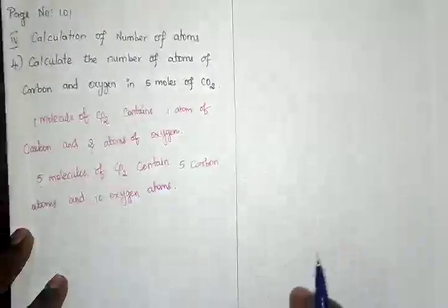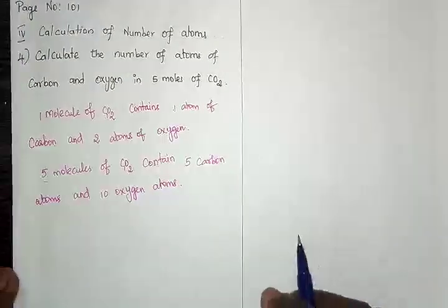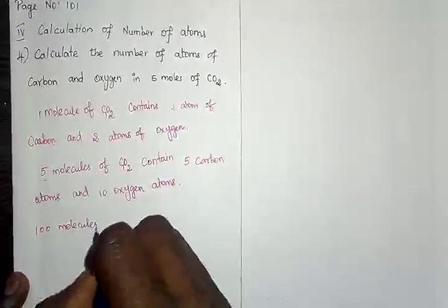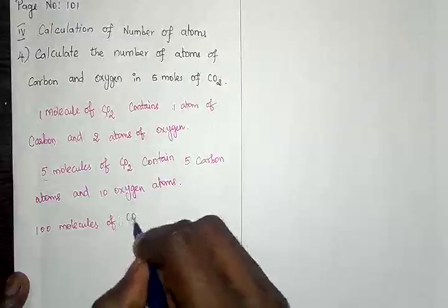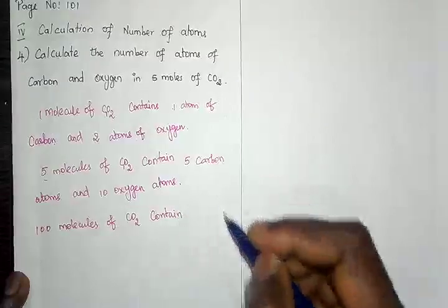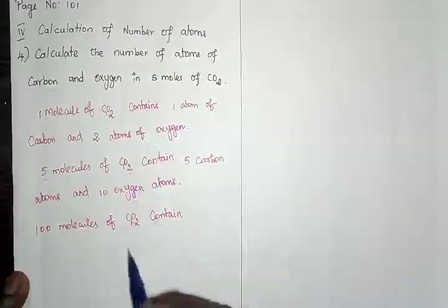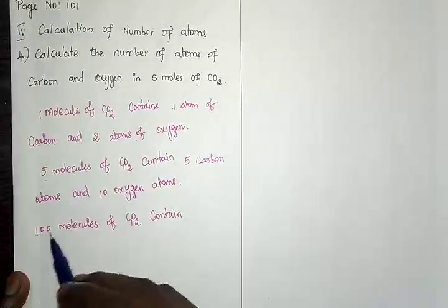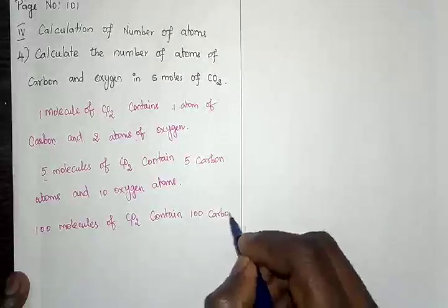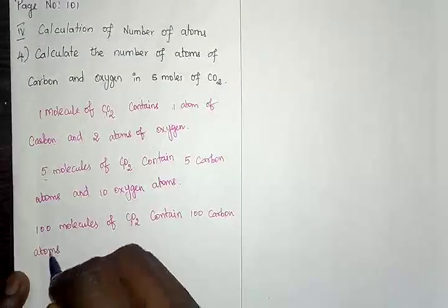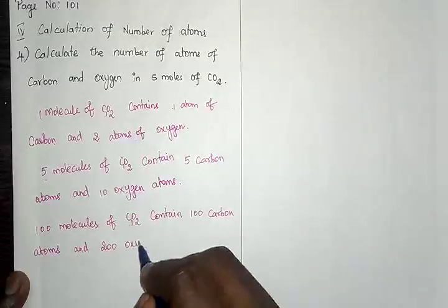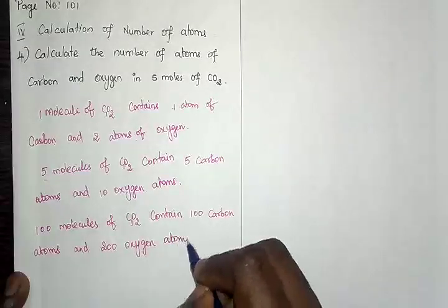Now, what if I give 100 molecules of carbon dioxide? The idea is simple: the number of carbon atoms is one per molecule, so 100 into one gives 100 carbon atoms. And 100 into two gives 200 oxygen atoms.